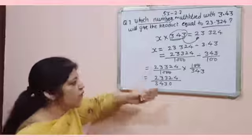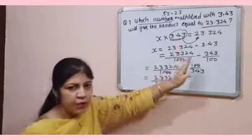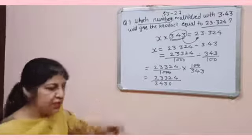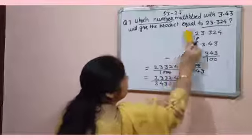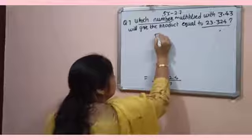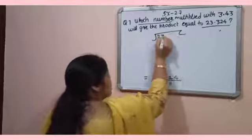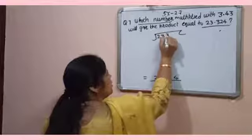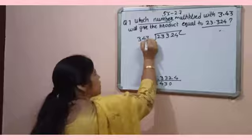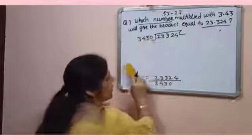So that is your wish. If you cancel, then multiply numerator by numerator and denominator by denominator. So now we will divide 23.324 by 3.430.